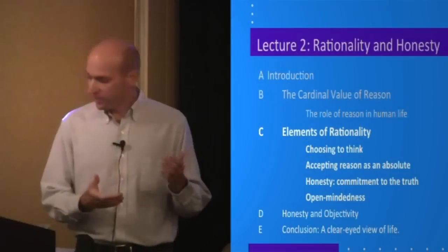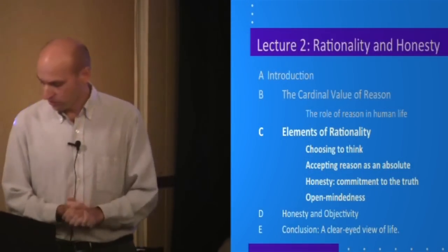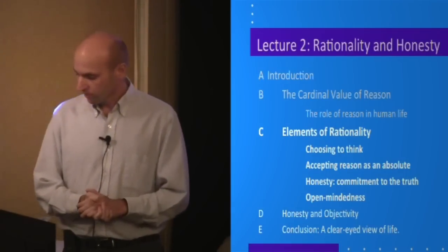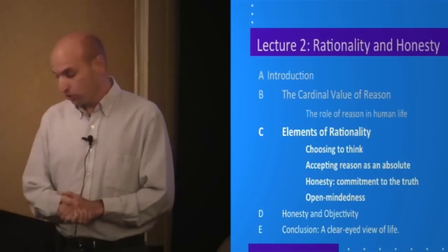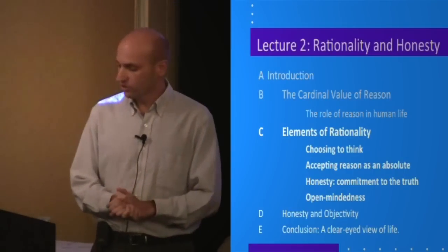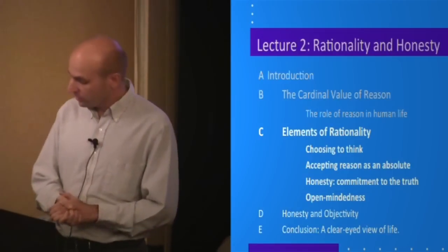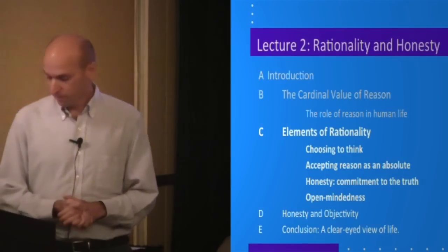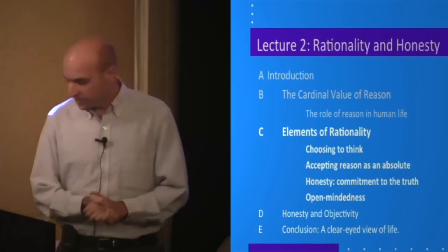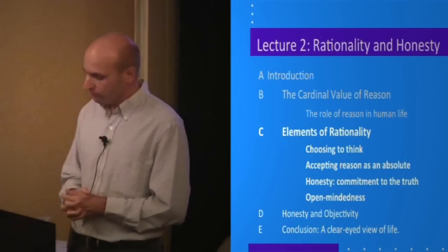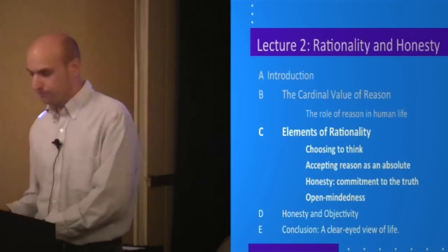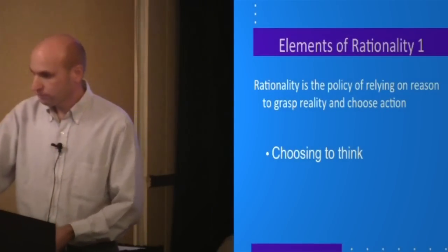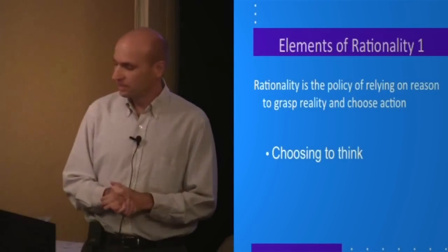Here is the order in which I'll treat each element. First, choosing to think—this has to do with the fact that the rational faculty is the source of our free will. Second, accepting reason as an absolute—this has to do with our need to be objective, ensuring our mental gaze never wanders from reality. Third, open-mindedness—this has to do with grasping reality, learning new information, and integrating it with what we already know. We'll start with choosing to think because this is where thinking starts.